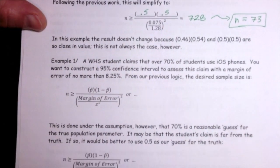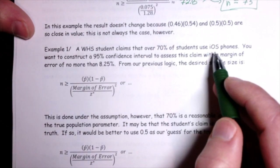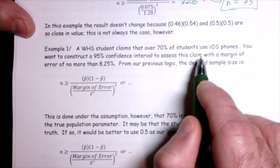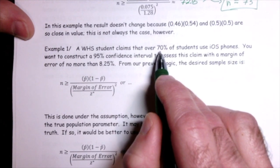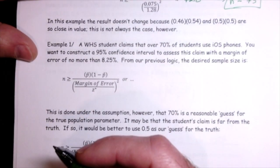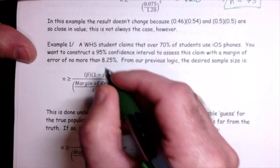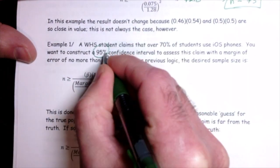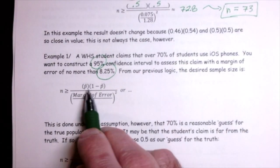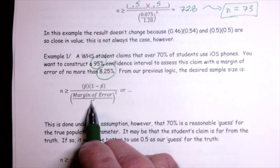Example one: a student claims over 70% of WHS students use iOS phones. You want to construct a 95% confidence interval to assess this claim and decide if 70% is plausible, with a margin of error of no more than 8.25%. The strategy: put in your best guess and (1 minus your best guess) in the numerator, then divide by (desired margin of error / critical value)². For 95%, the critical value is 1.96.